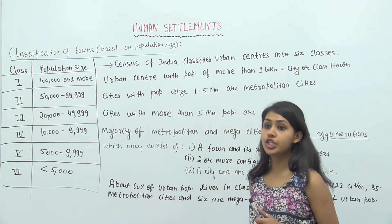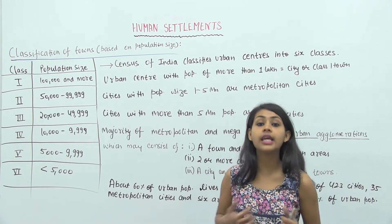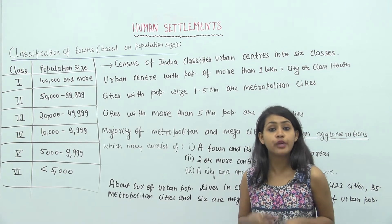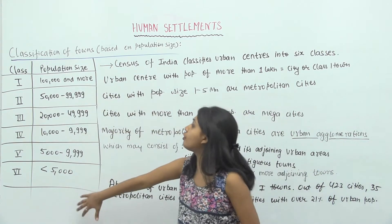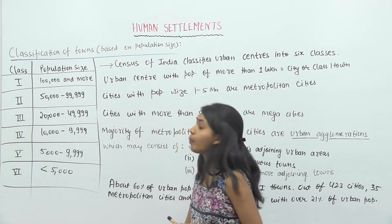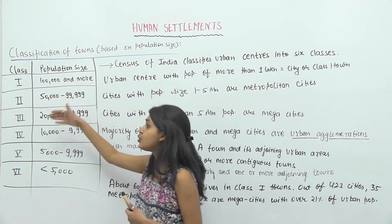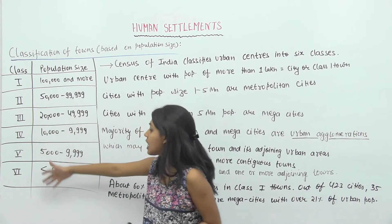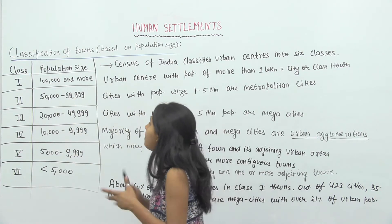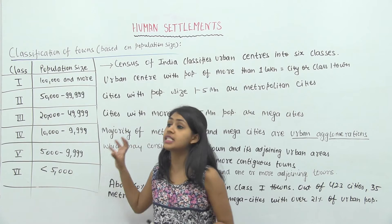The first base is population size. We classify towns by how many people live in that particular town. We have a table showing town classification on the basis of population size. Towns can be grouped as Class 1, Class 2, Class 3, Class 4, Class 5, and Class 6 — so there are 6 classifications. This table is something you should memorize; it is important and you have to remember it.